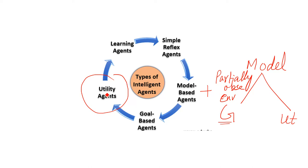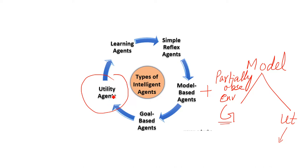One more thing about utility agents: they work when we have multiple routes or multiple possibilities to reach the goal state. If there is only a single opportunity, we cannot apply a utility agent, because it works on multiple different routes or options.